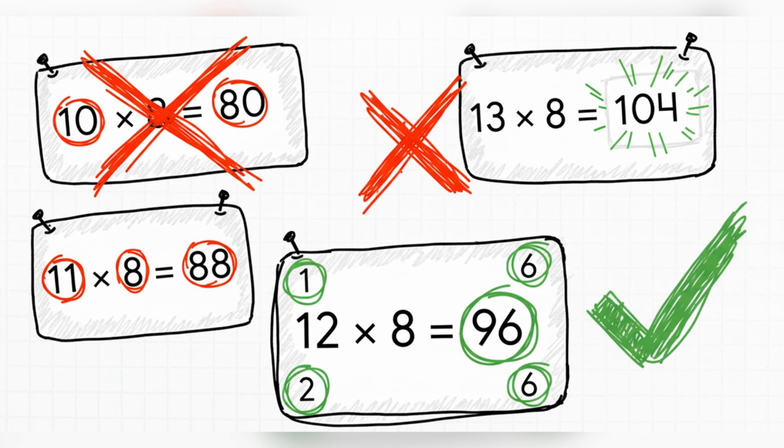What's next? 11? Well, P and Q would be the same, and that's not allowed either. Okay, how about 12? Let's see. 12 × 8 is 96. Let's check the letters. P is 1, Q is 2, R is 9, S is 6. Hey, all different digits. It works.